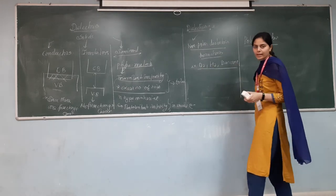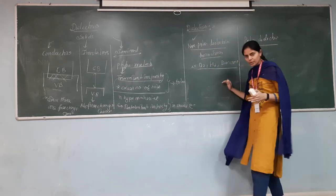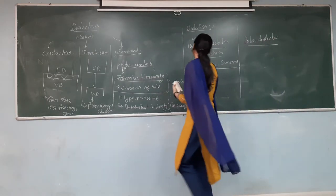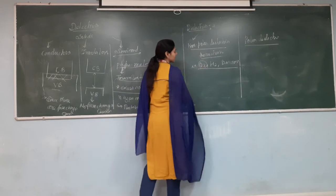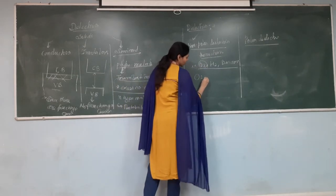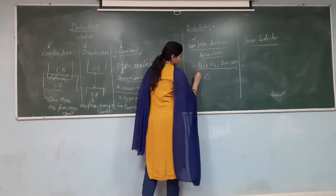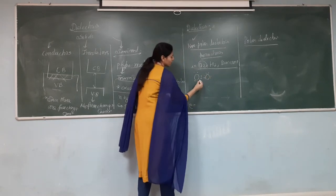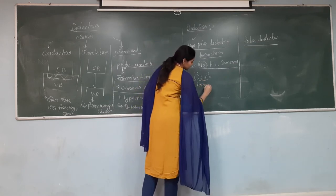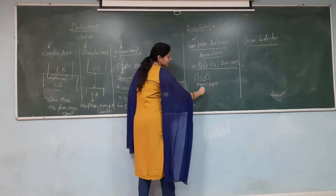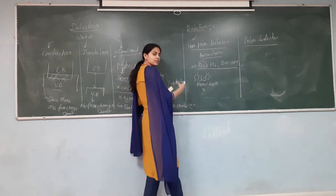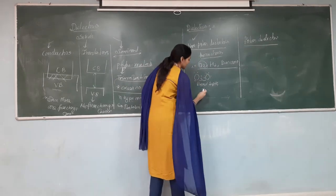In non-polar dielectrics, they do not have any permanent dipole moment. For example, in O₂, looking at its Lewis structure, the bond length is very short, so the centres of positive and negative charges tend to coincide.